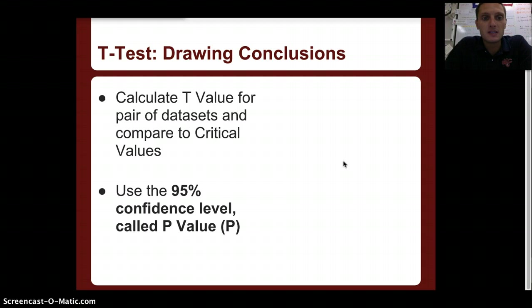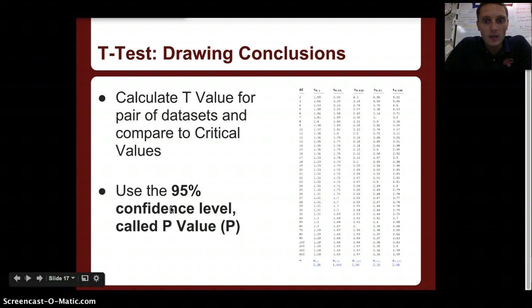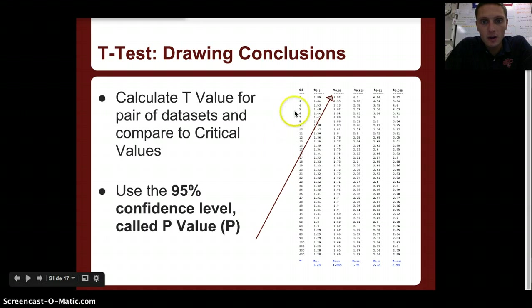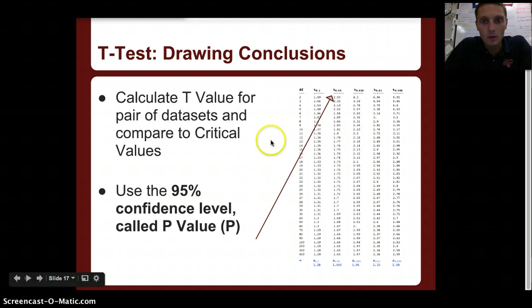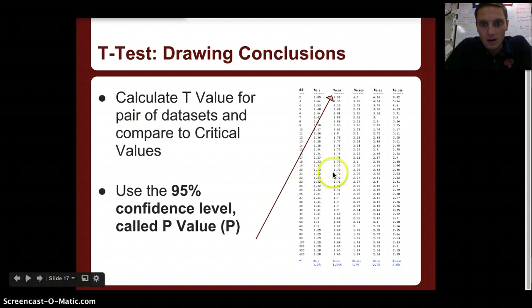We can calculate a t-value for a pair of data sets and compare it to the critical value. Using the 95% confidence level, we can determine what our critical value is from a t-table. Here in this chart, we have our degrees of freedom in one column. We find our degrees of freedom, then move to the 95% confidence level column — written as 95% or 0.05. For example, if 20 was our degrees of freedom, our critical value would be approximately 1.72.